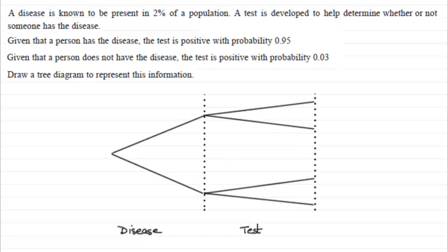We've got to draw a tree diagram for this question. I've already started it. You should have something looking like this. I've titled each of these two trials here. The first section here is on the person having the disease, and this trial here is about the test results.